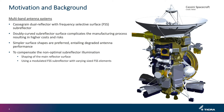Therefore, simpler surfaces are actually preferred. But because of non-optimal illumination onto the main reflector, the performance degrades. To compensate for this, one solution is to shape the main reflector surface, which is the traditional approach. Another novel solution is to use a modulated FSS subreflector with varying-sized FSS elements, and the latter is actually the topic of this presentation.